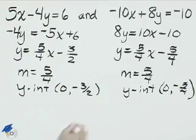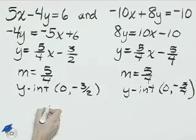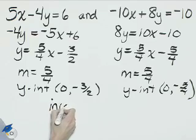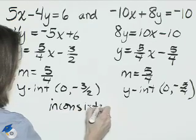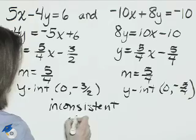Since the slopes are the same, but the y-intercepts are different, these are parallel lines. That makes this an inconsistent system. And there is no solution.